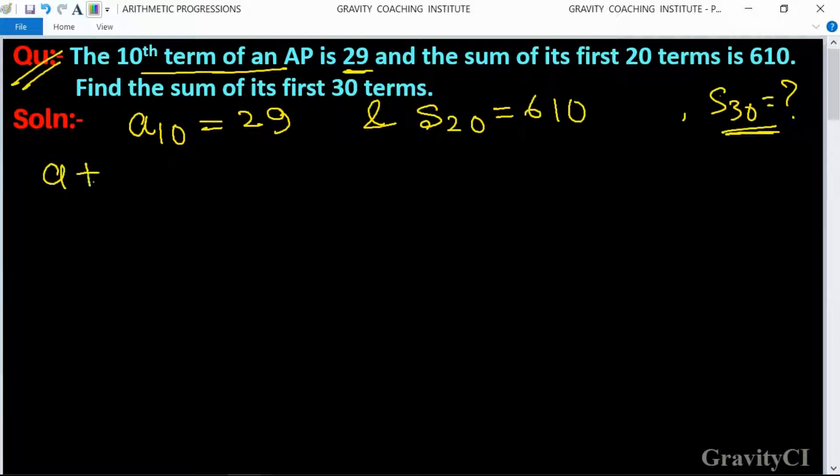A10 can be written as A plus 9D equals 29. This is equation first. And S20 is 20 upon 2...